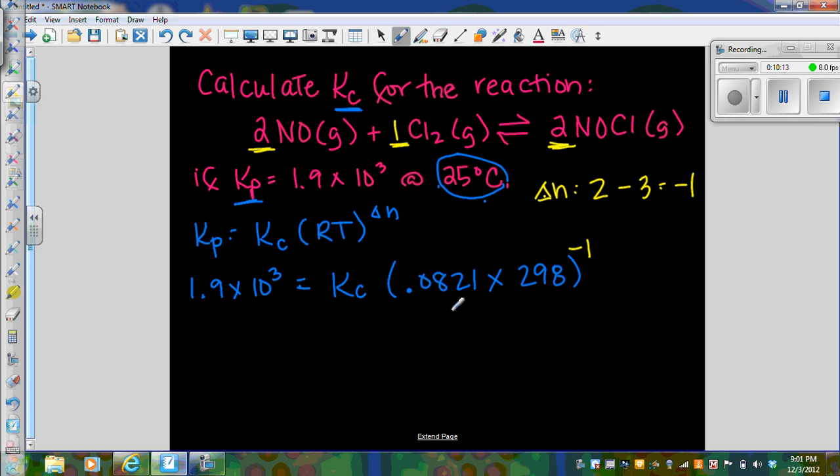So what I will do is I am going to take 0.0821 times 298 and then I am going to raise that to the negative 1 power. I am trying to do this on my cell phone and I don't know how to do this on my cell phone. Okay, so then what I am going to do is I am going to take the quantity that I got here and I am going to take 1.9 times 10 to the 3rd and divide it by this, so my Kc will end up being two significant figures 4.6 times 10 to the 4th.